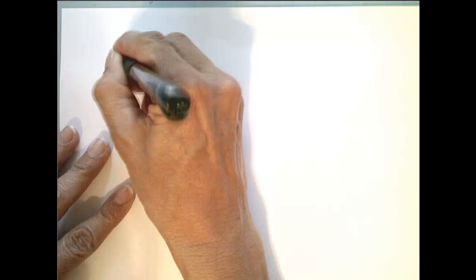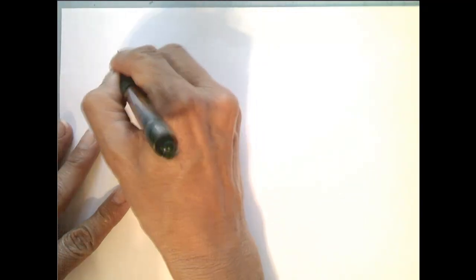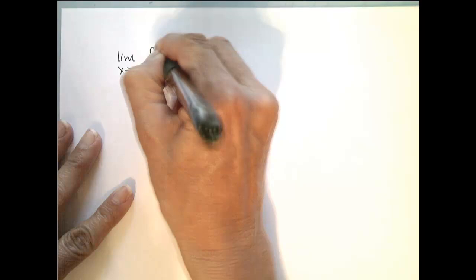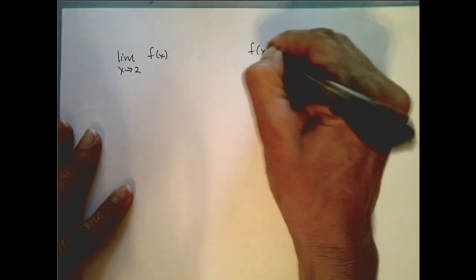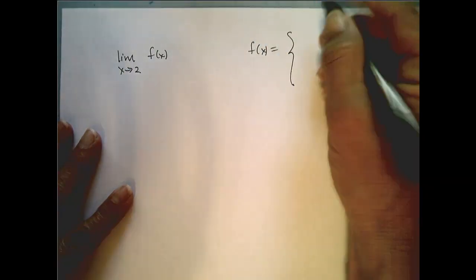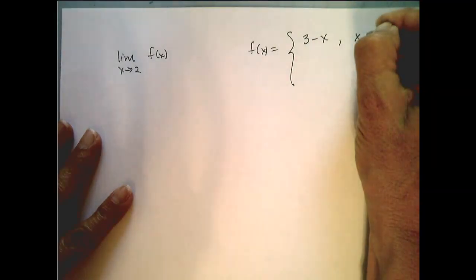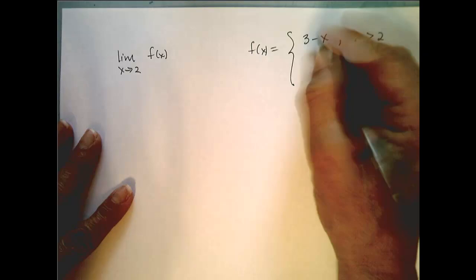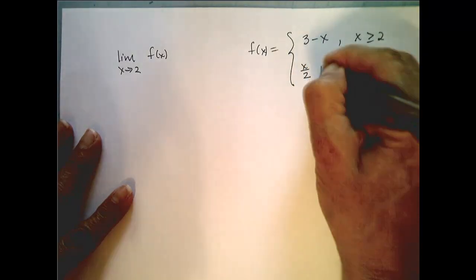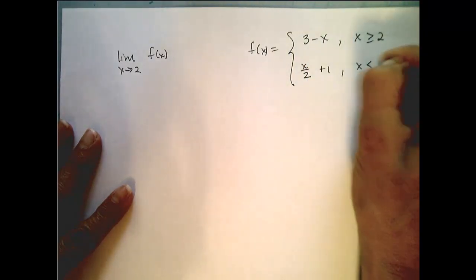In the first case, let's look at the limit as x approaches 2 of my function f(x). Remember, f(x) is equal to the piecewise defined function 3 minus x when x is bigger than or equal to 2, and x over 2 plus 1 when x is less than 2.